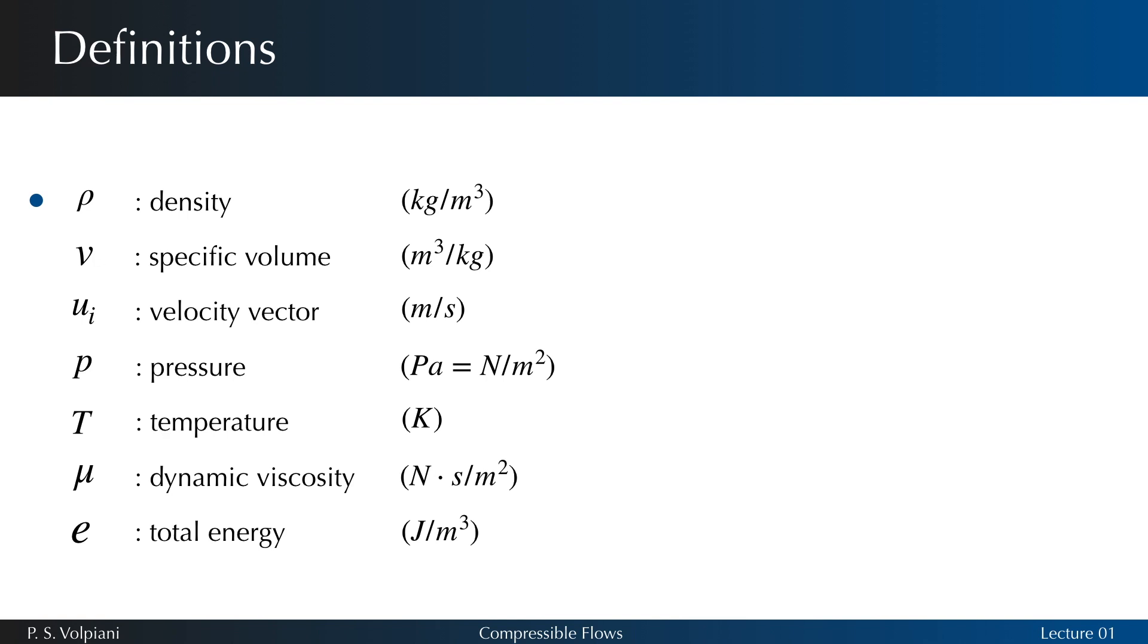ρ stands for the density. v denotes the specific volume of the gas, or the volume per unit of mass. ui is the velocity vector. p is the pressure. T the temperature. μ the dynamic viscosity and e the total energy per unit mass.